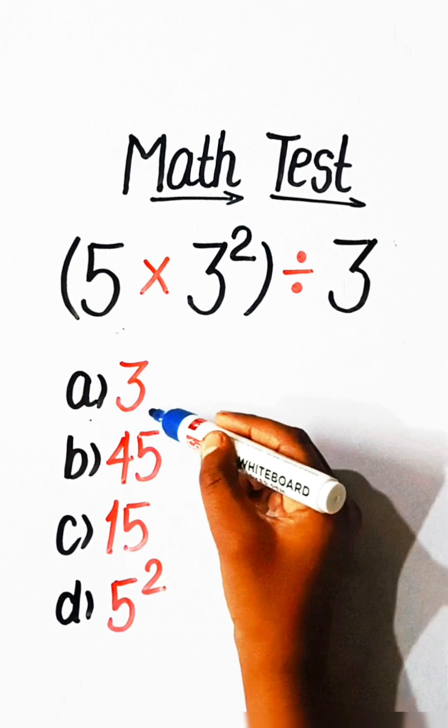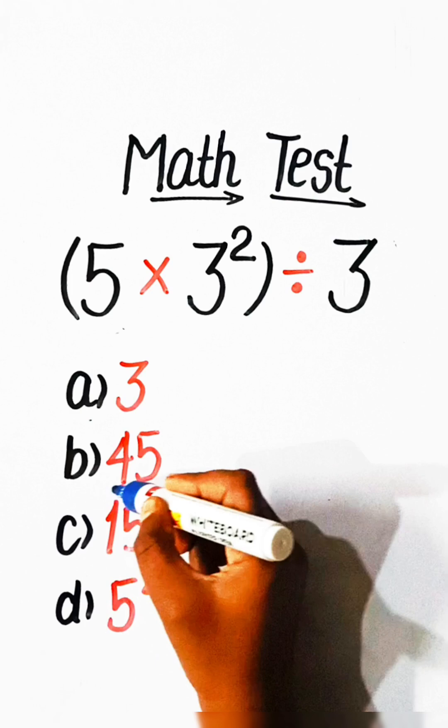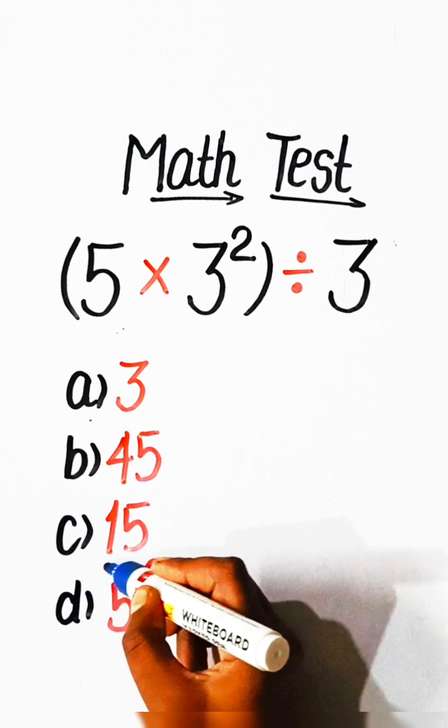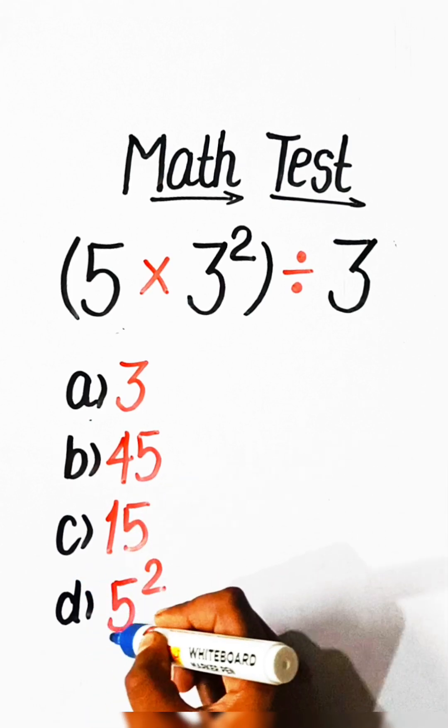Option A, 3. Option B, 45. Option C, 15. Or option D, 5 squared.